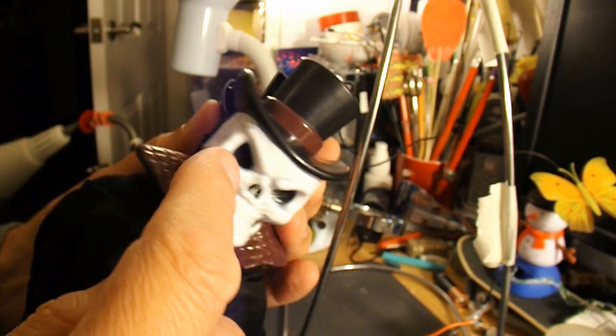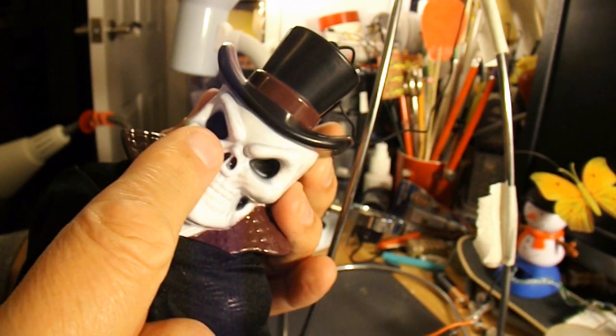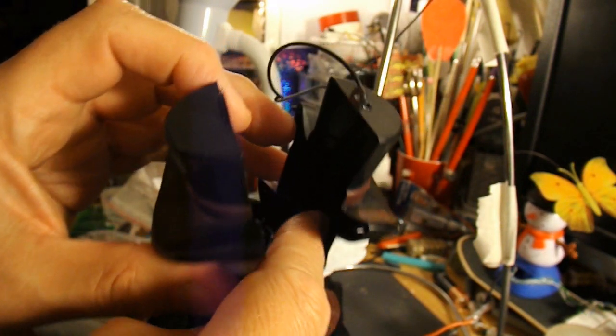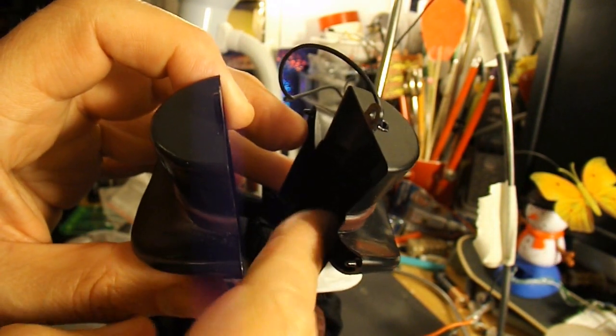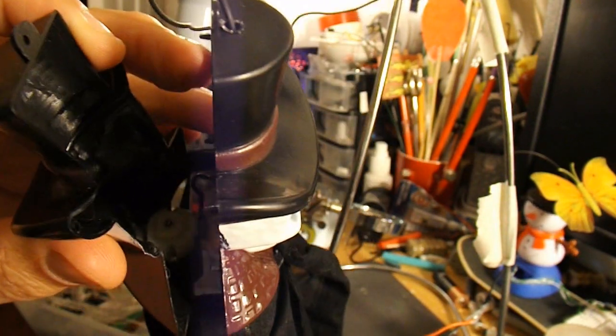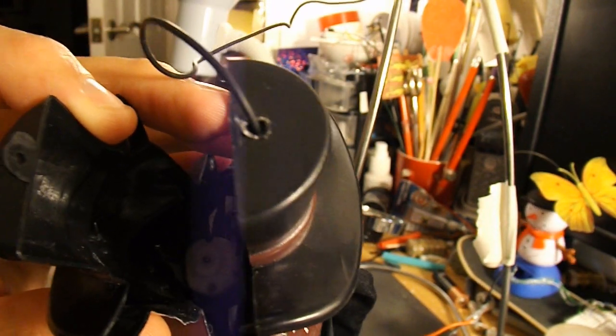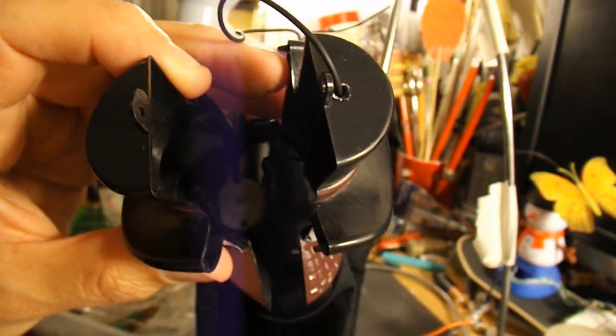So I should be able to melt some holes for his eyes using the soldering iron and then poke the LEDs straight through from the back here and connect them up to the wires that go to the motor. And that should do the job.